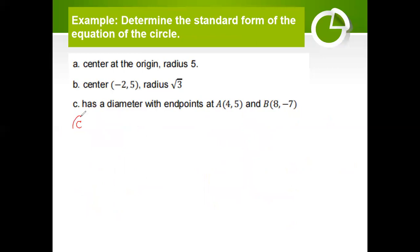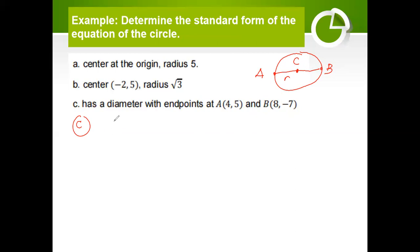Now let's proceed with letter C. If a circle has a diameter with endpoints A and B, the midpoint is the center. To determine the standard form of the equation, we need to identify the center first — which is the midpoint between A and B. Recall the midpoint formula: ((x₁ + x₂)/2, (y₁ + y₂)/2). Substituting our values, we have (4 + 8)/2 and (5 + negative 7)/2.